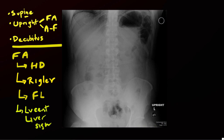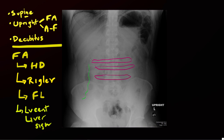Before discussing bowel obstruction, it's useful to identify small bowel versus large bowel on abdominal radiographs. In general, the small bowel resides centrally, while the large bowel travels along the periphery, forming a picture frame around the small bowel. The haustra of the large bowel tend to be thicker than the valvulae conniventes of the small bowel, and haustra incompletely circle the large bowel wall. The valvulae conniventes, by contrast, trace the full breadth of the small bowel.